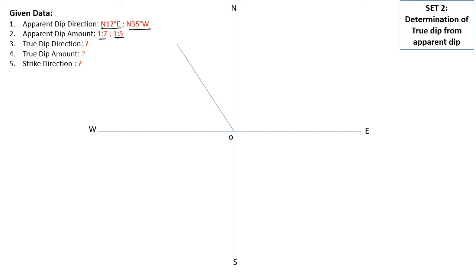First, I have plotted north 35 degrees west direction, and I will mark the amount as 1 is to 5 — that means 5 centimeters from point O. I will name that point as point A.